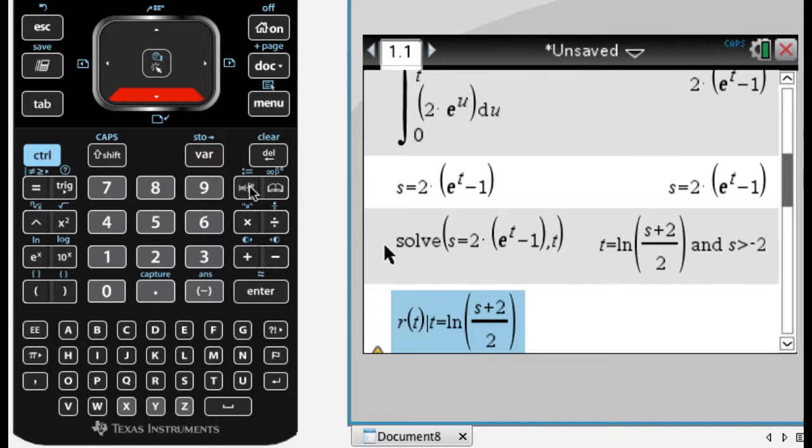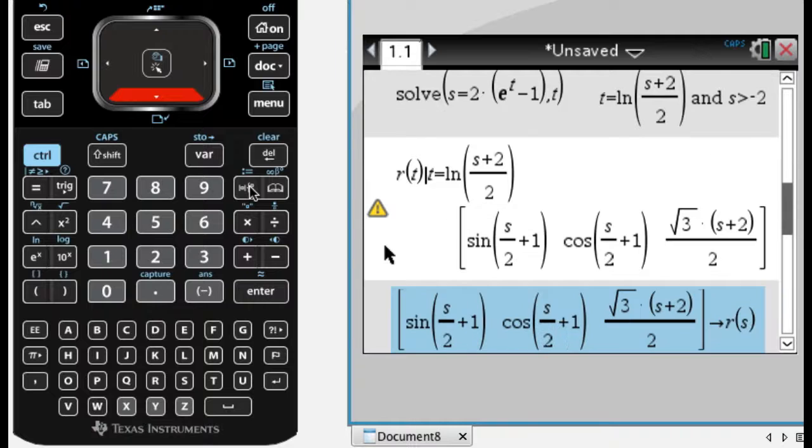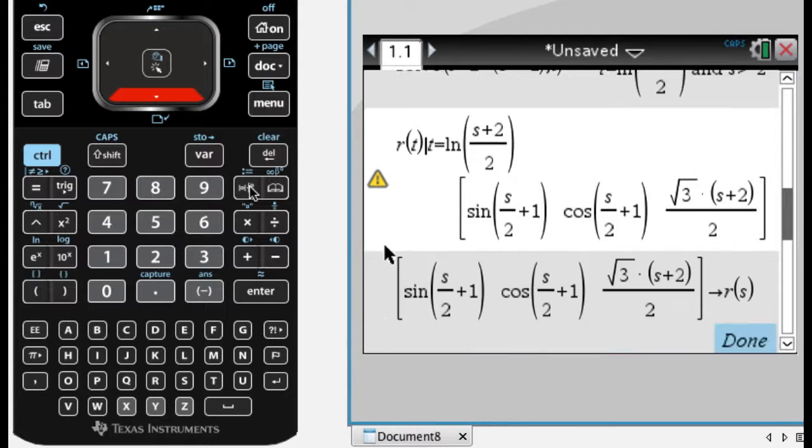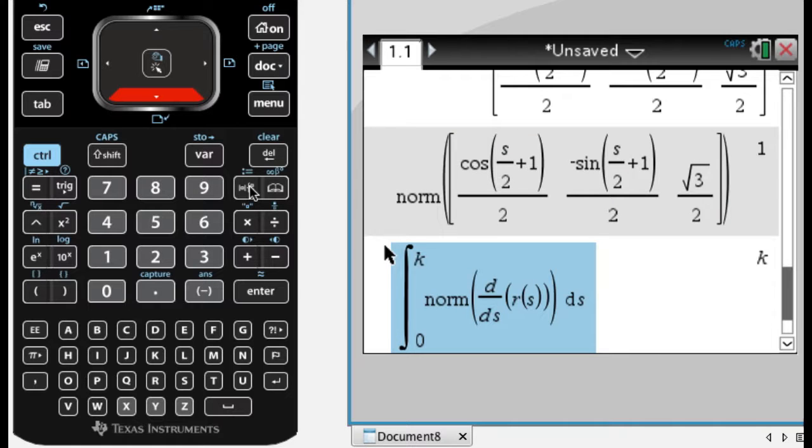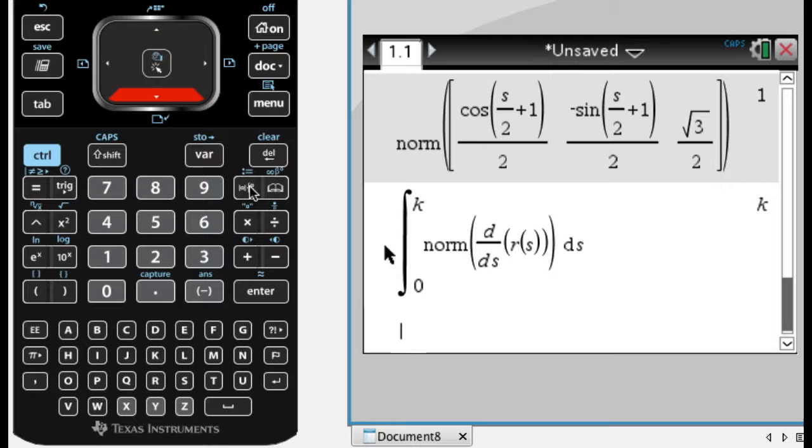And I substitute back into my original, which gave me this. This is the arc length parameterization, and then I just kind of confirmed it by taking the derivative and looking at the magnitude of that, I got 1. So for all values of s, the magnitude would be 1, and then the integral from 0 to k is equal to k, which means if you spend whatever, k seconds walking along your curve, you're going to go k units along that curve, so it's a unit speed parameterization. And that's how you do it, so I hope you found this helpful and good luck!